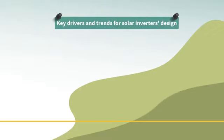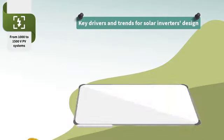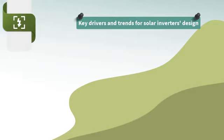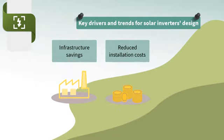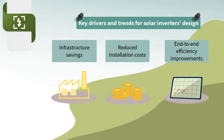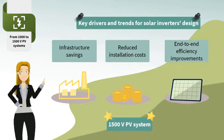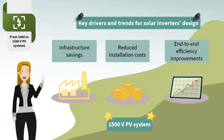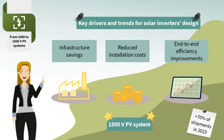The key drivers for the solar inverter's design are system costs and end-to-end efficiency optimization. One of the major trends in utility-scale PV solar projects is the change from 1000 to 1500 volt systems. Basically, the value of increased system voltages translates into infrastructure savings, reduced installation costs, and end-to-end efficiency improvements. As time goes by, it is expected that the 1500 volt PV voltage will be the mainstream for utility-scale installations. In fact, 1500 volt PV inverters are expected to account for more than 70% of the three-phase PV inverter shipments in 2023.